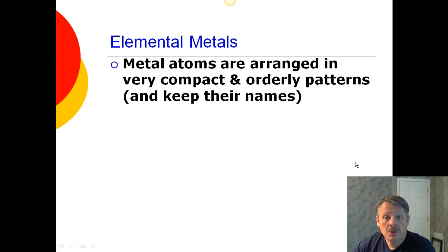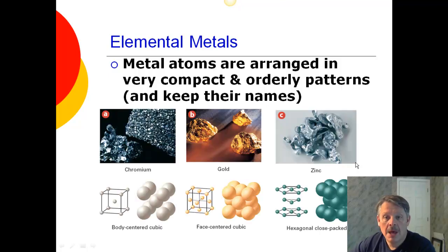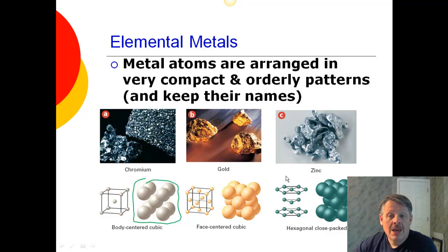So elemental metals. We have metal atoms, and they can be arranged in very compact and orderly patterns, and they keep their names. For example, chromium. Chromium over here arranges itself this way in forms of atoms. And gold is slightly different, and zinc is slightly different. But they do come up with these patterns that hold them together.